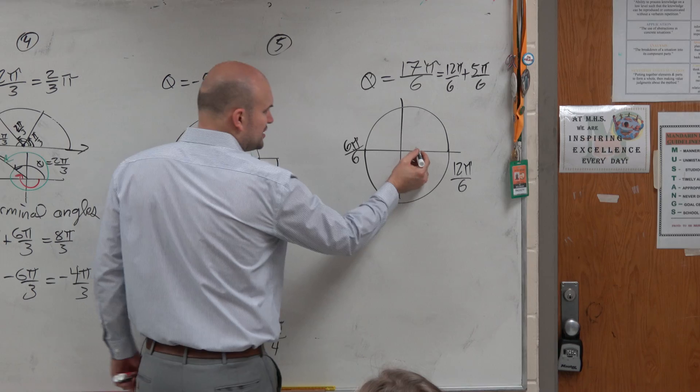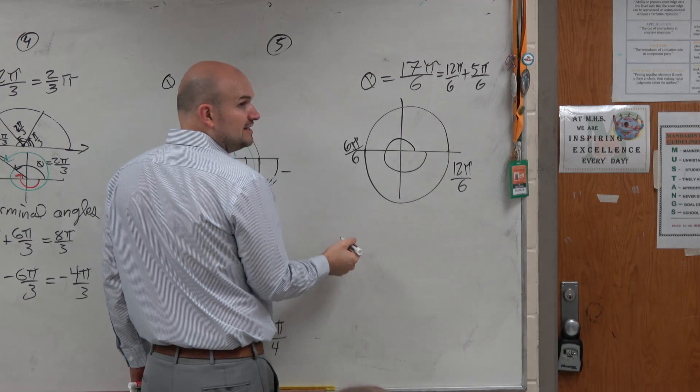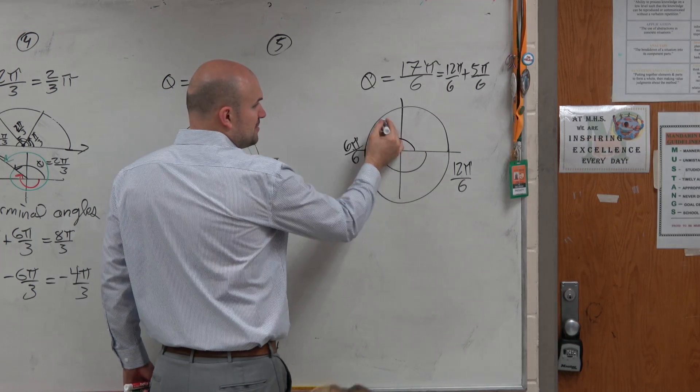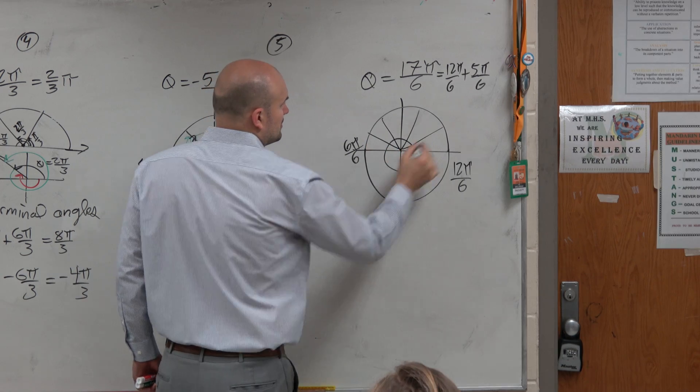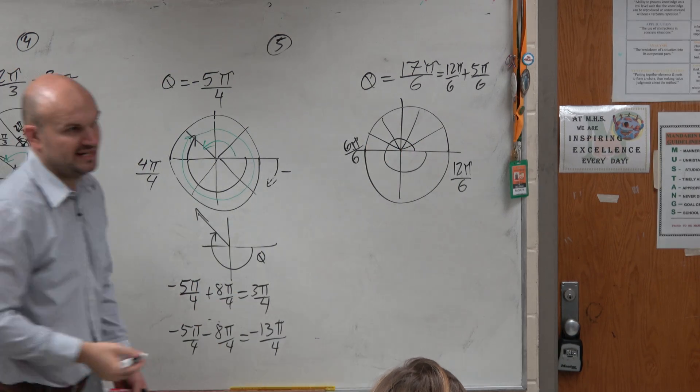So I have a revolution, 12π, and now I need to go 5π over 6. So I need to break this up into six parts. And then I need to go five of them.